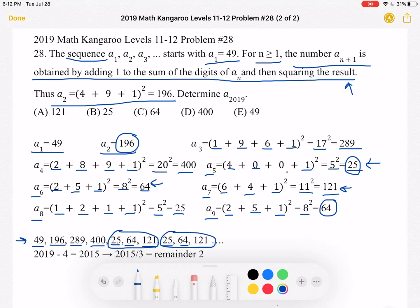So let's remind ourselves what it is we're looking for. We're looking for A2019. We can find what A2019 is by taking 2019 and subtracting four, because keep in mind these four numbers don't follow our pattern. Then we'll get 2015.